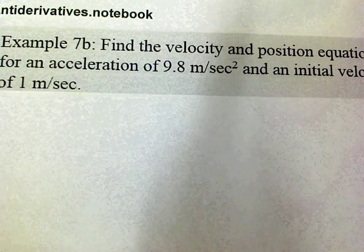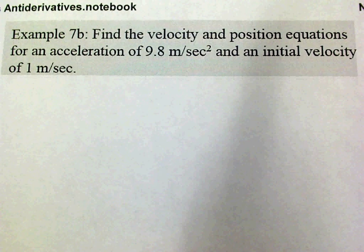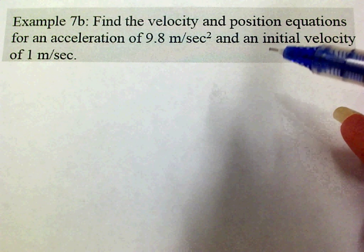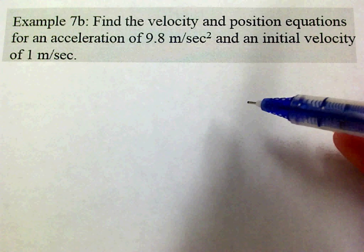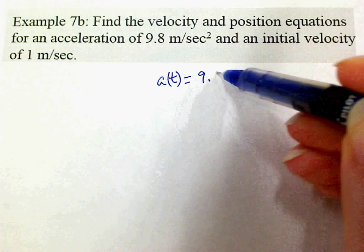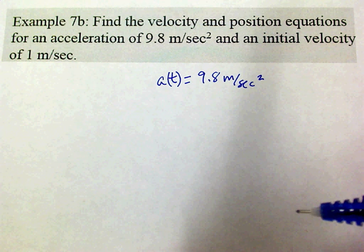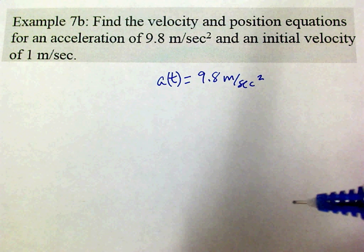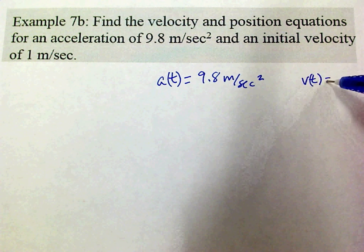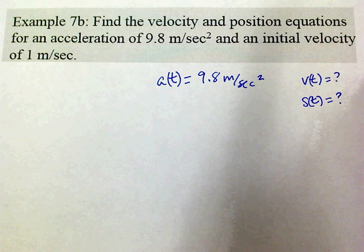Okay. Find the velocity and position equations for an acceleration of 9.8 meters per second squared and an initial velocity of 1 meters per second. Okay. So here's what I've got. I've got my acceleration function. It's 9.8. Acceleration has not got a variable because acceleration due to gravity is constant. Find the velocity equation and the position equation. And the only thing that they're telling me is that the initial velocity, so the velocity at time 0 is 1 meter per second. So this is all the information they've given me. And they want me to find the velocity and the position function.